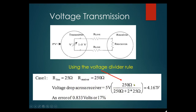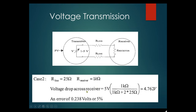Using the voltage divider rule: Case two — line resistance is 25 ohms but the receiver is 1 kΩ (high impedance). Voltage drop across receiver: 1000 divided by (1000 + 2×25) = 4.76 volts. Having a high receiver resistance improves accuracy because more current flows through the receiver, giving a larger voltage drop across the receiver relative to the lines.